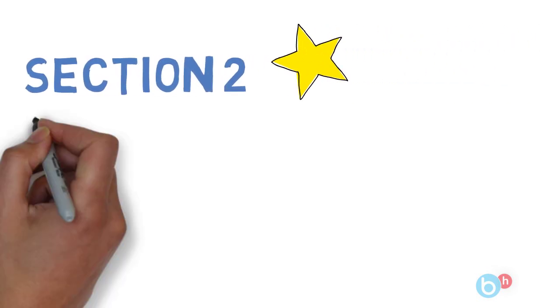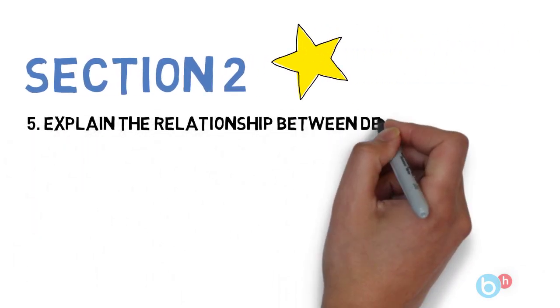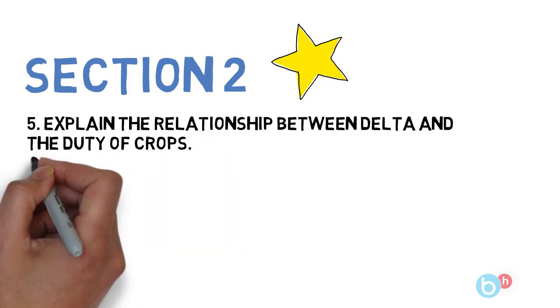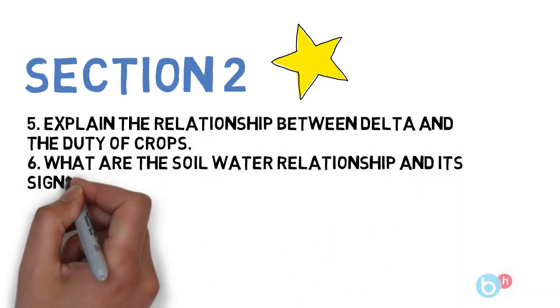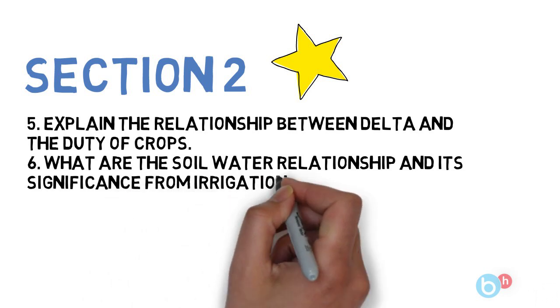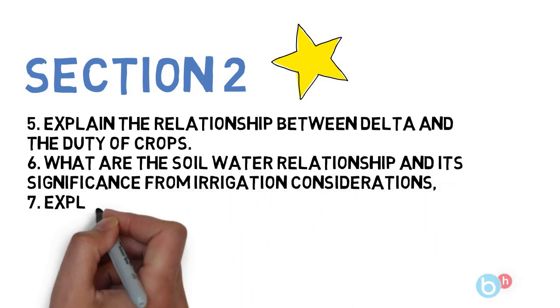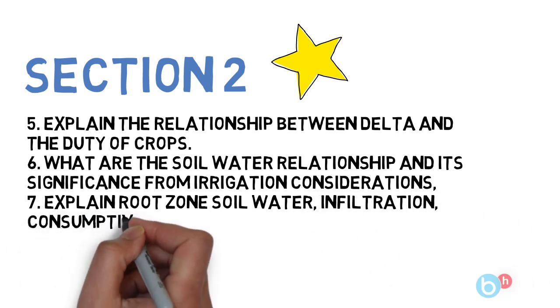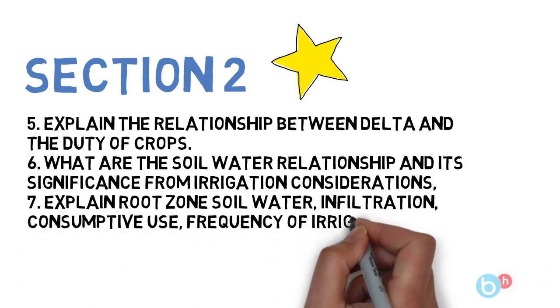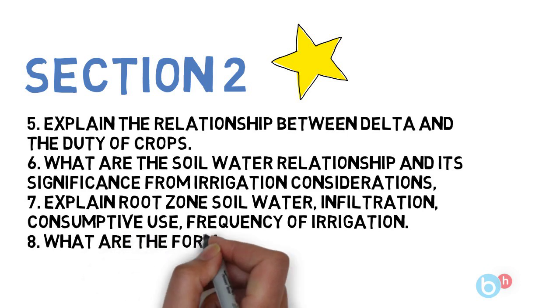Let's go to section two. The first question is explain the relationship between delta and the duty of crops. Next is what are the soil-water relationships and its significance for irrigation consideration. Next is explain root zone soil water and infiltration, consumptive use, and frequency of irrigation. Last one is what are the forms and types of precipitation.